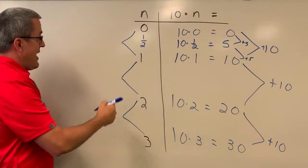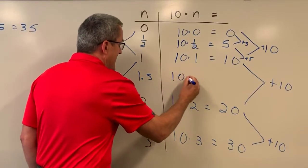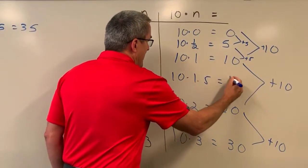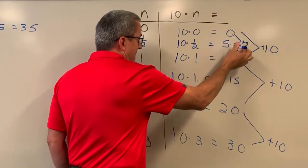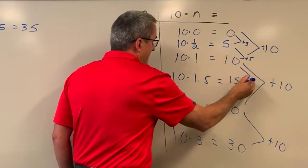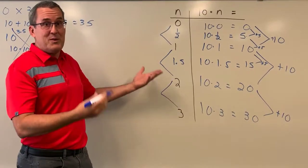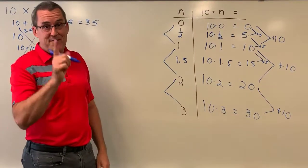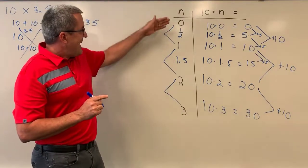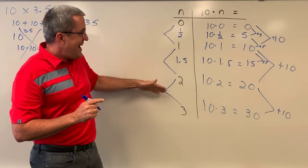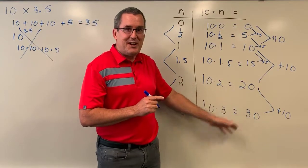If we go to 1.5, 10 times 1.5 gives us 15. We see this same pattern of adding 5, adding 5, adding 5. I think you should continue that pattern and convince yourself that as n increases by one-half, the product is going to increase by 5 each time.